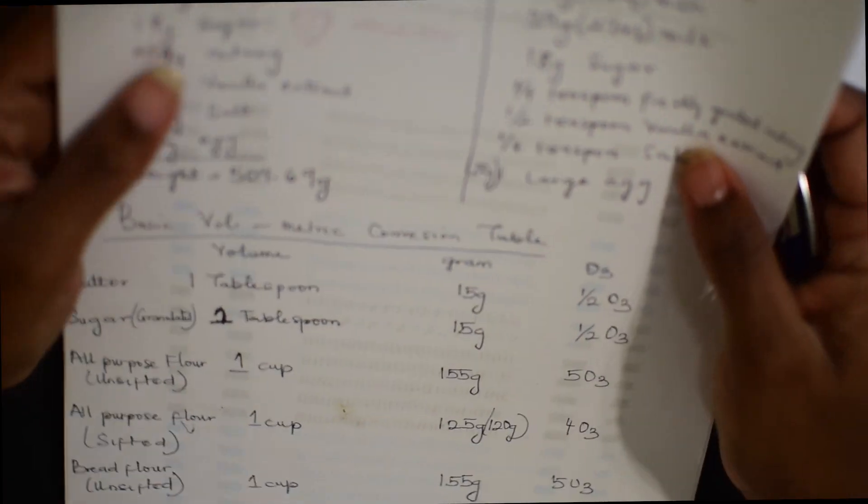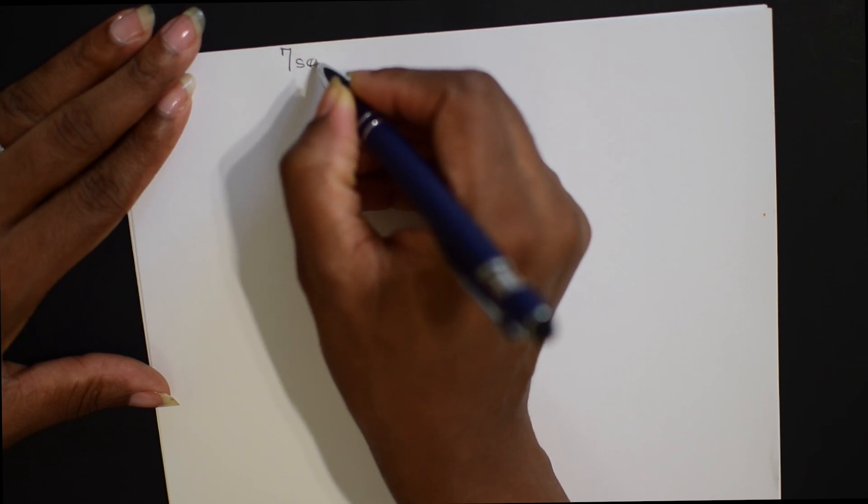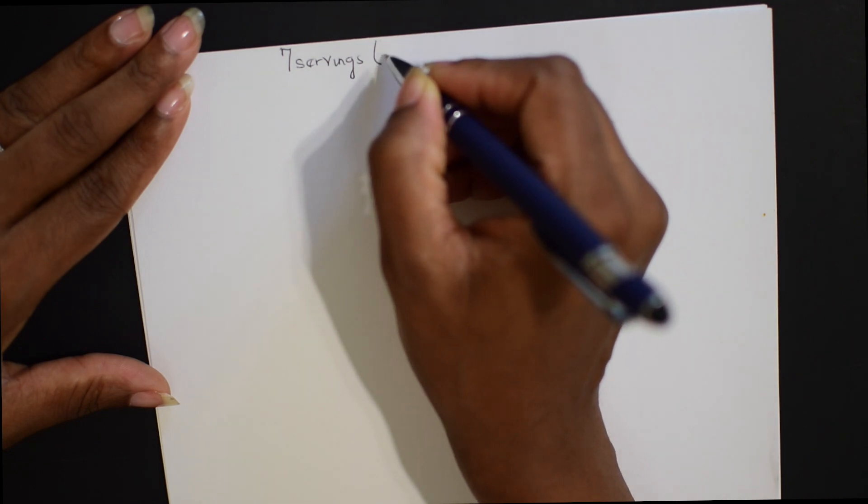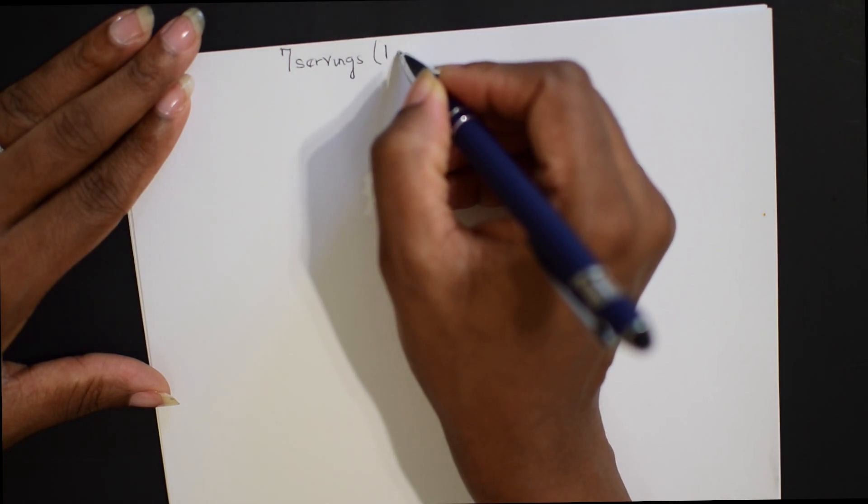This is the recipe on my channel and I rightly went ahead and converted it to grams. So you have for seven servings, which was what my doughnut was all about. A serving is just one piece of doughnut.